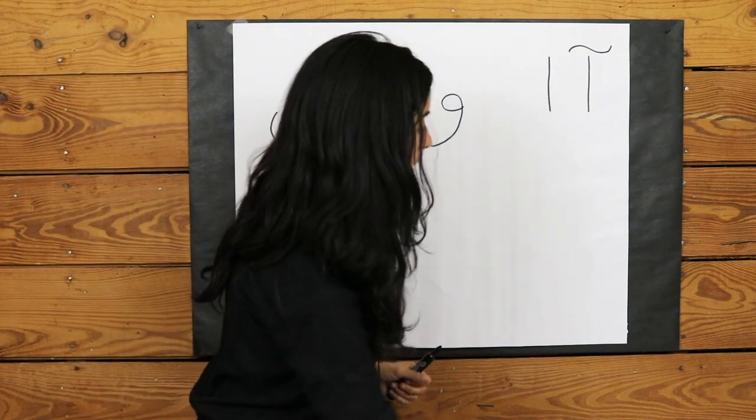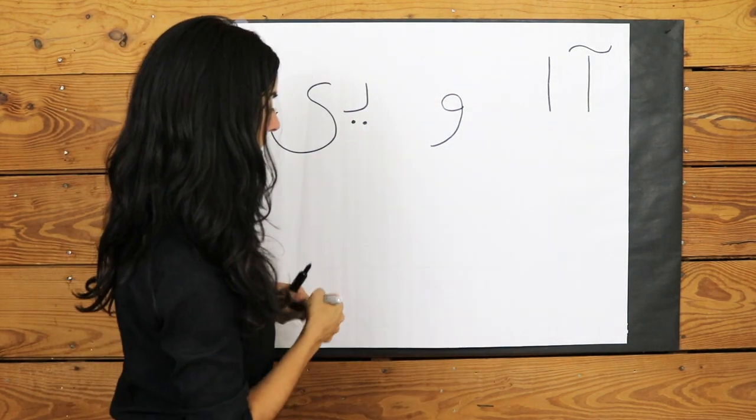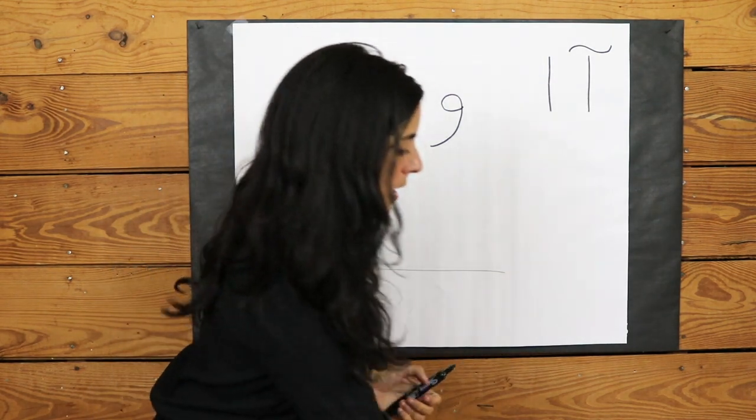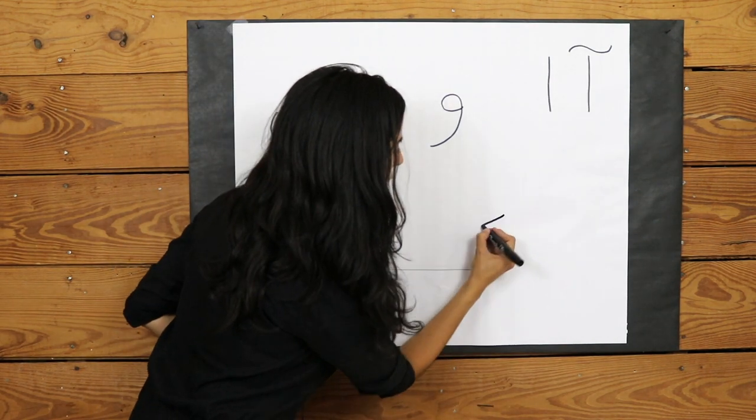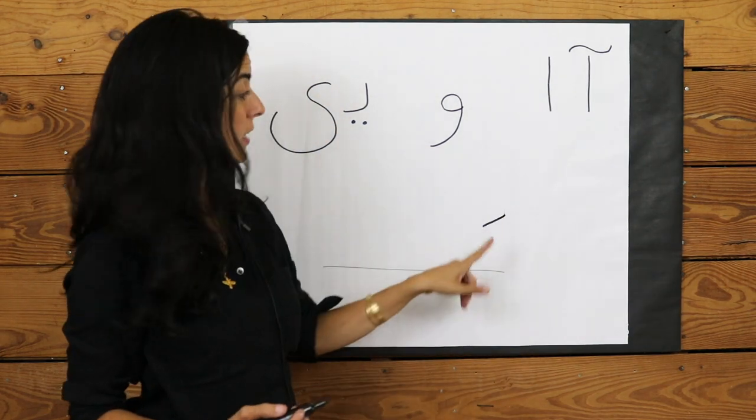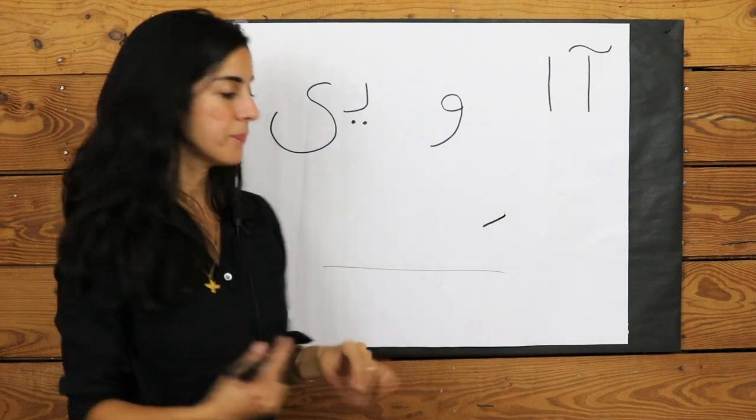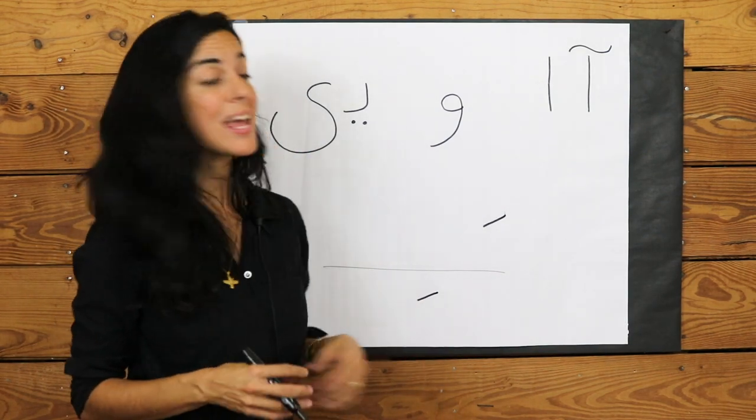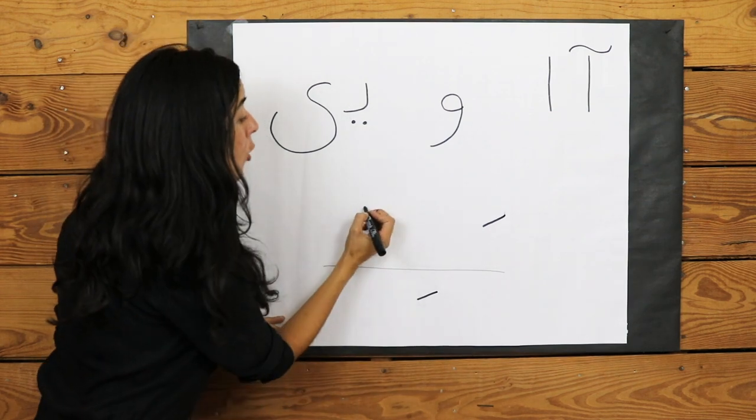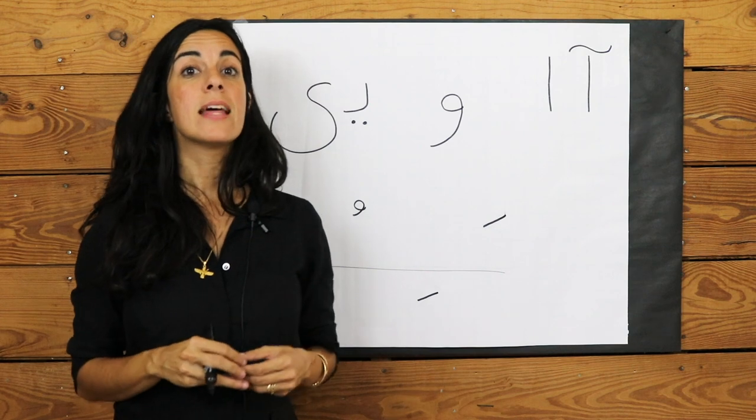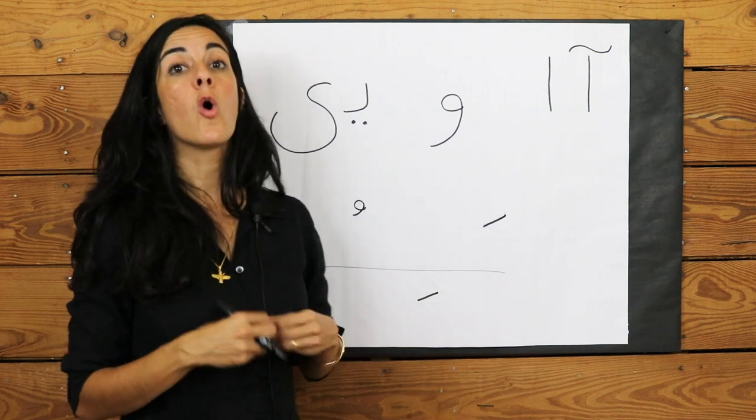The next vowels appear in the form of accents. If there's an accent that looks like that above a line or above a letter, it's read as A. When it appears below a line or below a letter, it's read as E. When you have an O symbol above a letter or above a line, then it's read as O.